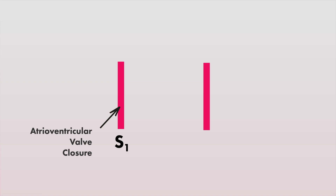To put this all together, let's listen to a normal heart sound. When listening to this heart sound, this is S1 — it reflects the closure of the atrioventricular valves — which makes this S2, representing the closure of the semilunar valves.